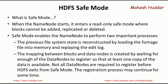The second thing is: the mapping between the blocks and the Data Nodes is created by waiting for the Data Nodes to send block information in the form of HeartBeat signals. Whenever a block of information is written into Data Nodes, that information should be written into the Name Node, so that whenever a client makes a request, the Name Node knows where the block of information is written on the Data Node. In Safe Mode, the Name Node waits for Data Nodes to send block information so it can create the Metadata on its memory.